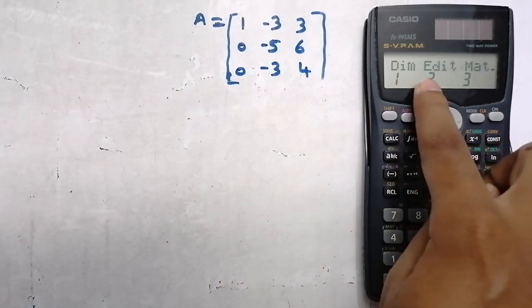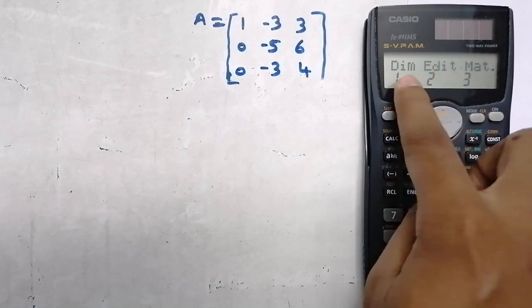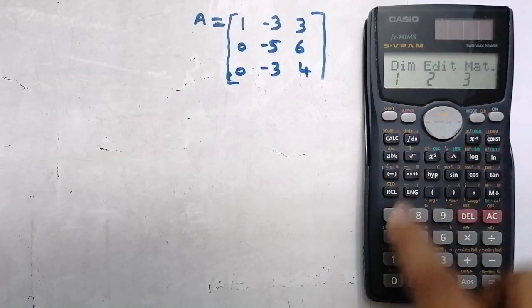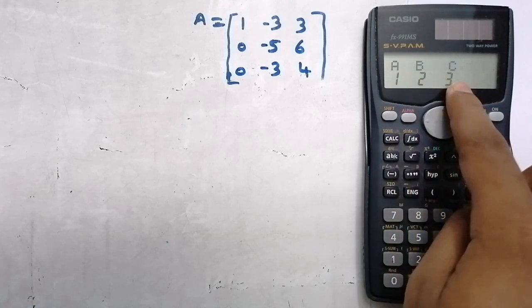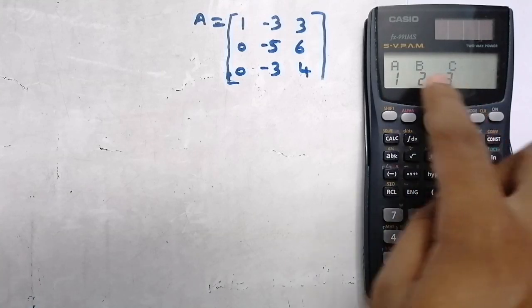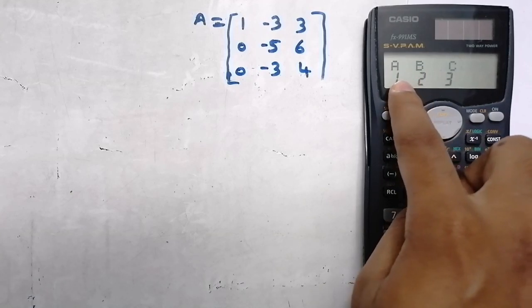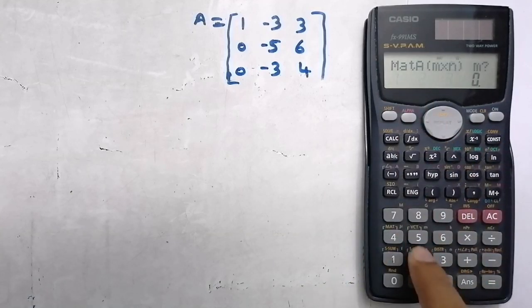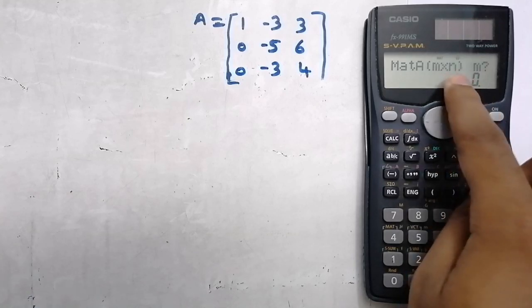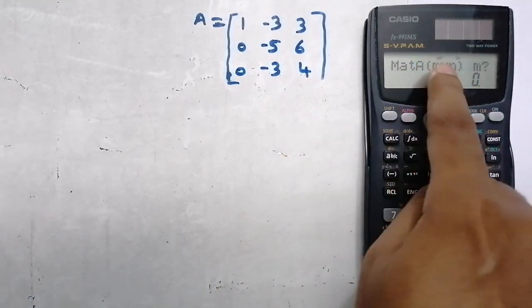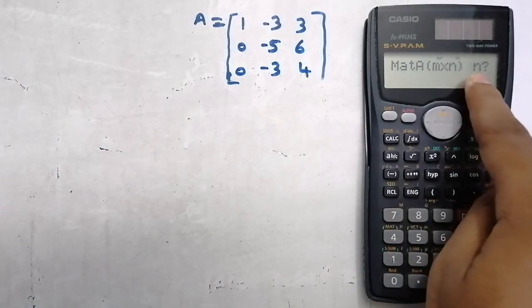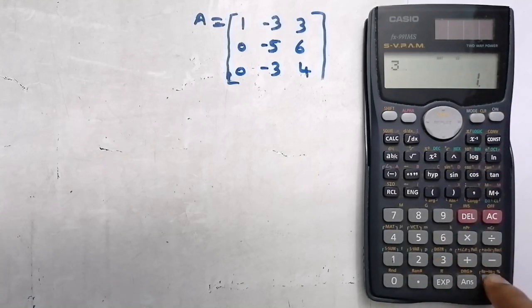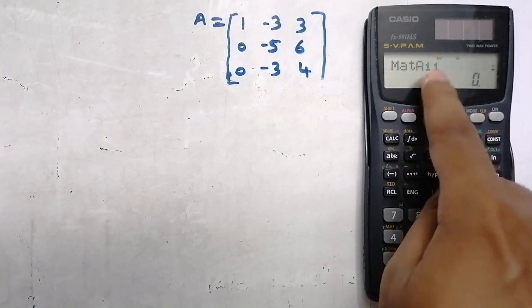To store a matrix, press Shift then number 4. You will see options: Dimension, Edit, Matrix. Press number 1 to set the dimension. They will ask for the name of the matrix — Matrix A, B, or C. We can store up to 3 matrices. I am going to name it A, so I press number 1. Then they ask for the order — this is a 3×3 matrix, so M equals 3. Press 3 then Equal. Then N, the number of columns, is also 3. Press Equal.